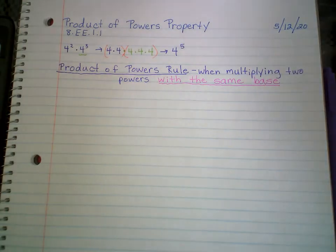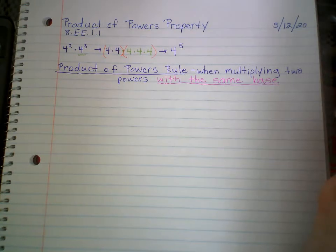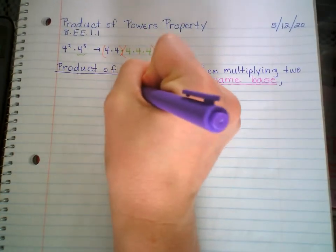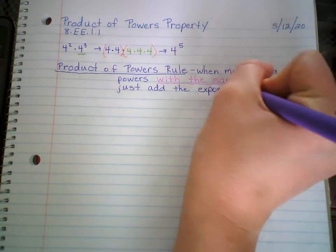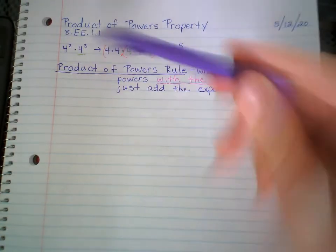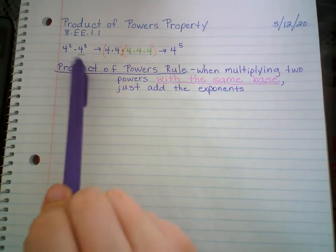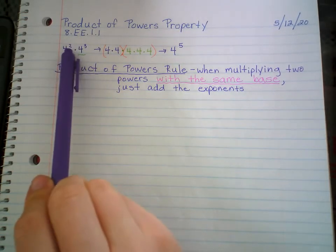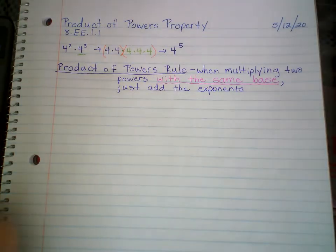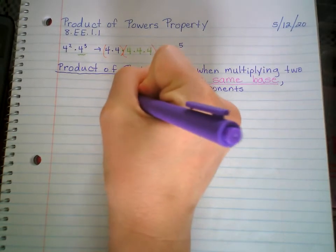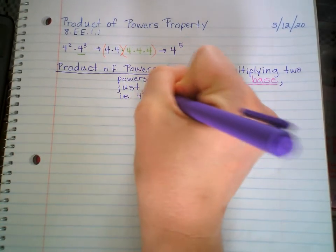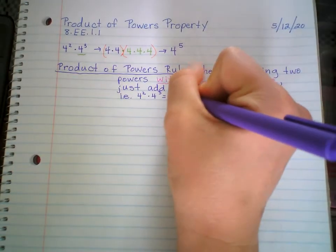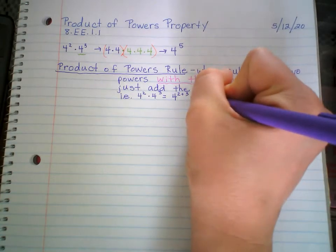So when you have the same number as the base and you're multiplying the powers, all you gotta do is add the exponents. Just add the exponents. When multiplying 2 powers with the same base — 4 squared times 4 cubed, they both have 4 as the base — just add the exponents. 2 plus 3 is 5. Pretty straightforward. So for example: 4 squared times 4 to the 3rd equals 4 to the 5th. Same base, just add the exponents. 2 plus 3, so it's 4 to the 5th.